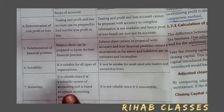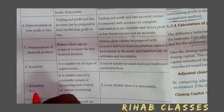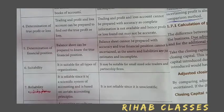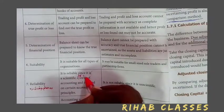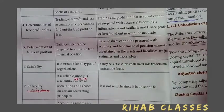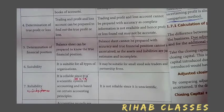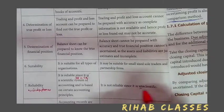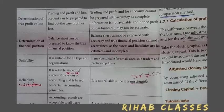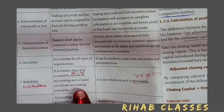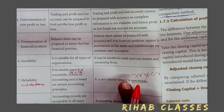The next basis is reliability. In the double entry system, accounts are maintained in a scientific manner — debit and credit aspects are both recorded. In the single entry system, this is unscientific because debit and credit are not equally maintained. Therefore, the double entry system is reliable and the single entry system is not reliable at all.